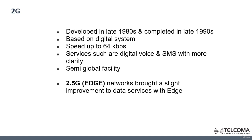Then we have General Packet Radio Services, GPRS, with a maximum download speed reaching 80 kilobits per second. And then we have EDGE — Enhanced Data Rates for GSM Evolution — where when EDGE was used, the speed was improved to 236 kilobits per second.